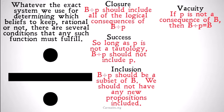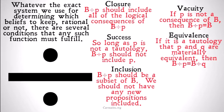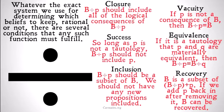Vacuity: if P is not a consequence of B, then B contracted by P should just be B — nothing happens. Equivalence: if it is a tautology that P and Q are materially equivalent, then B contracted by P should equal B contracted by Q. Note that if the material equivalence of P and Q is merely one of your beliefs and not a tautology, this does not hold, and we again have the problem of underdetermination. Finally, Recovery — the most controversial: B is a subset of B contracted by P, plus P. Basically, if we add P back after removing it, B can be recovered as a full set and we shouldn't have lost any of the pieces of information that were removed when we contracted B by P.